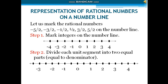In step number 2, divide each unit segment into two equal parts — equal to the denominator. In the given rational numbers, we have 2 in the denominator. That's why we have to divide into equal parts of two.